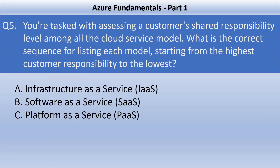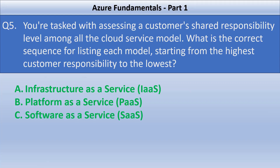Next question: you are tasked with assessing a customer's shared responsibility level across all cloud service models. What is the correct sequence from highest to lowest customer responsibility? The correct sequence is infrastructure as a service first — it carries the most responsibility — followed by platform as a service, and then software as a service, which carries the least customer responsibility.